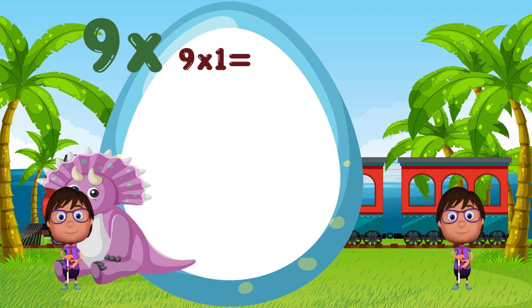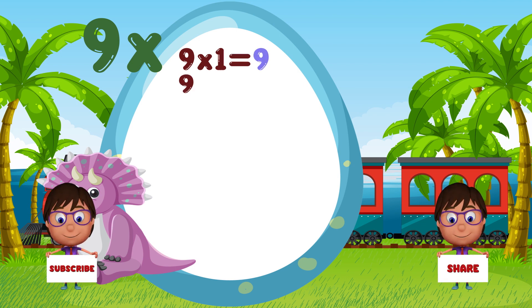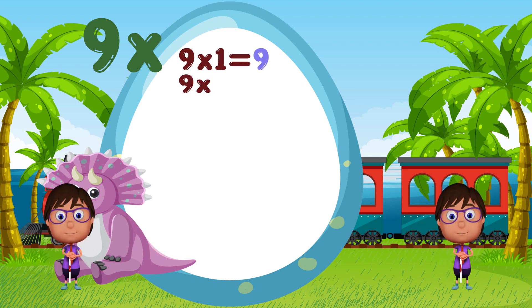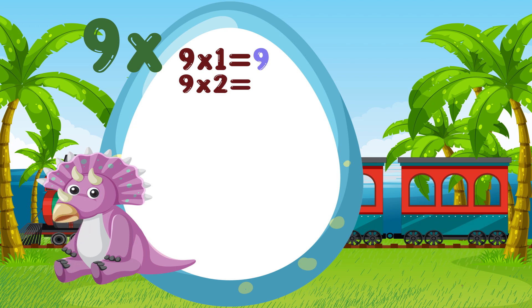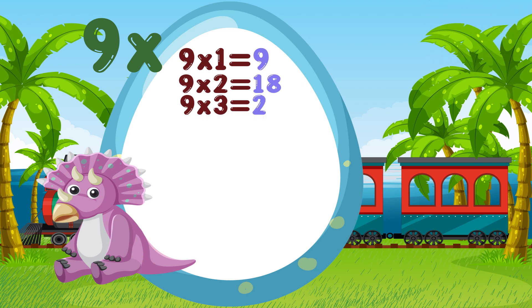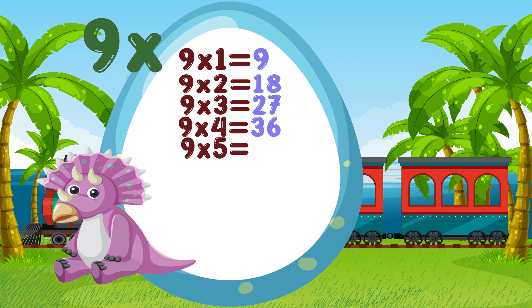9 times 1 is equal to 9. 9 times 2 is equal to 18. 9 times 3 is equal to 27. 9 times 4 is equal to 36. 9 times 5 is equal to 45.